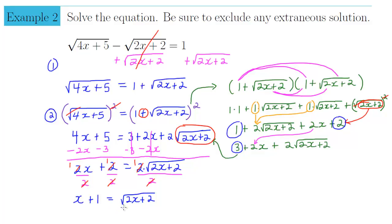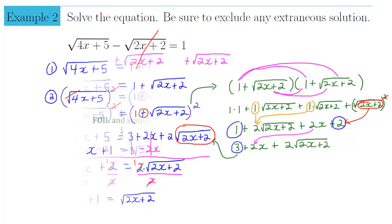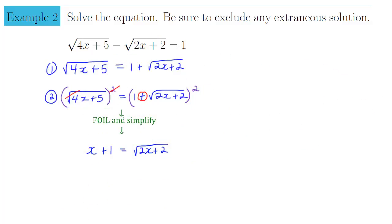Let me clean up and recap what we've done so far. We moved the square root over to isolate √(4x+5), then squared both sides to eliminate it — which required FOILing and created a big mess — but after simplifying everything, it ended up looking like x + 1 = √(2x+2). Now we're going to have to once again square both sides to get rid of this remaining square root.